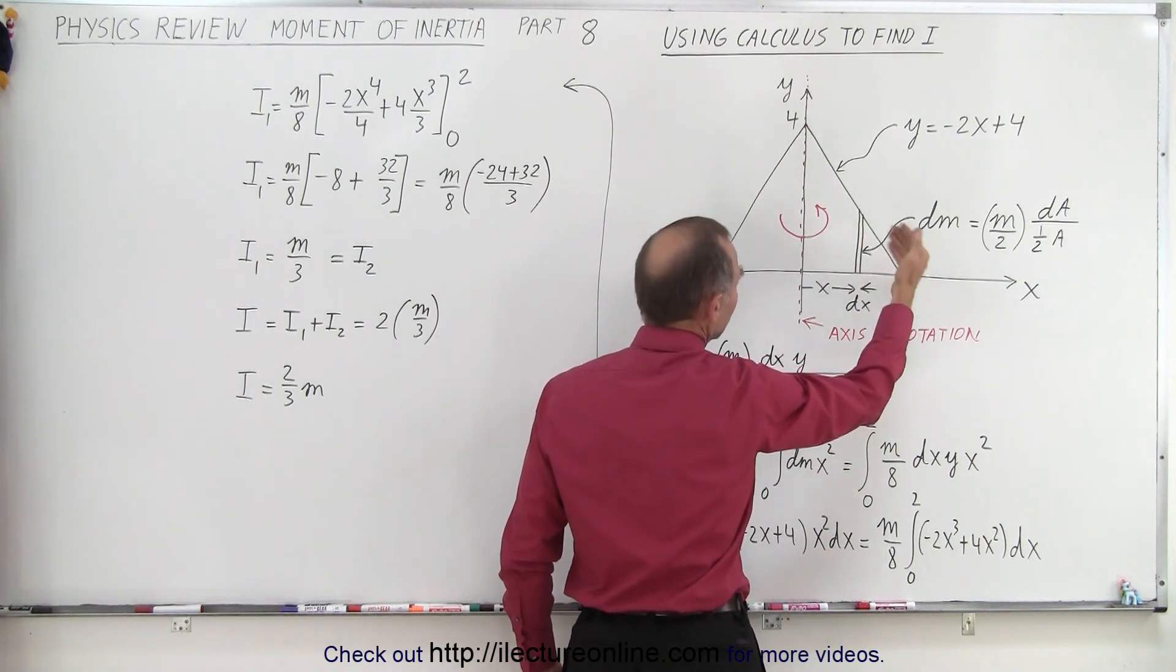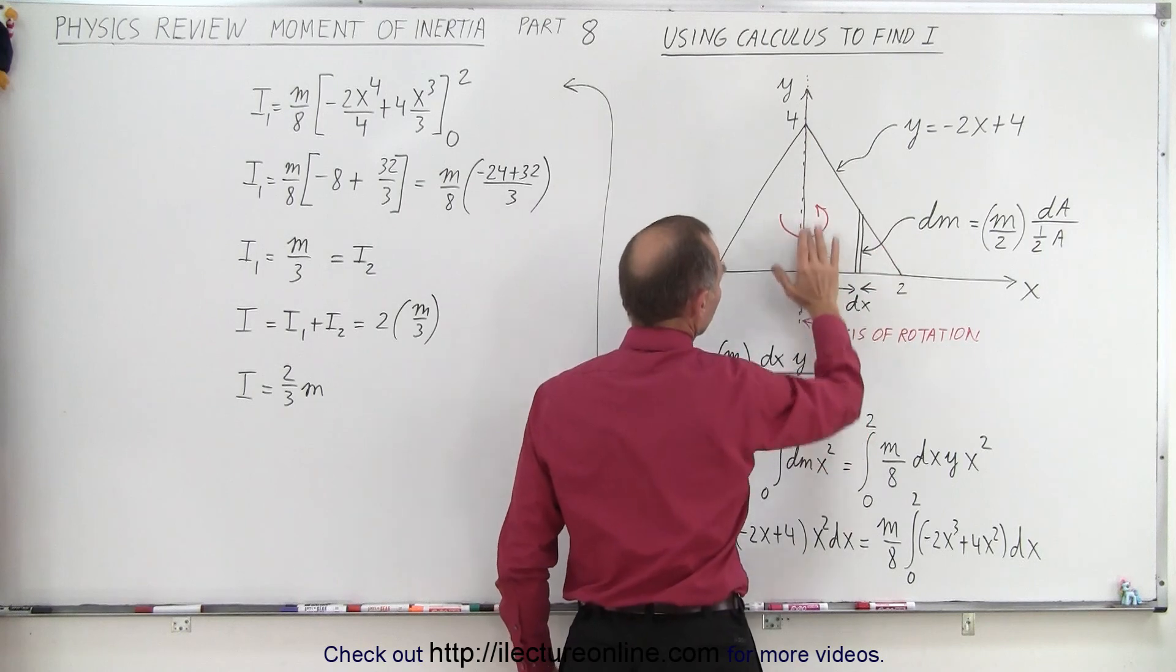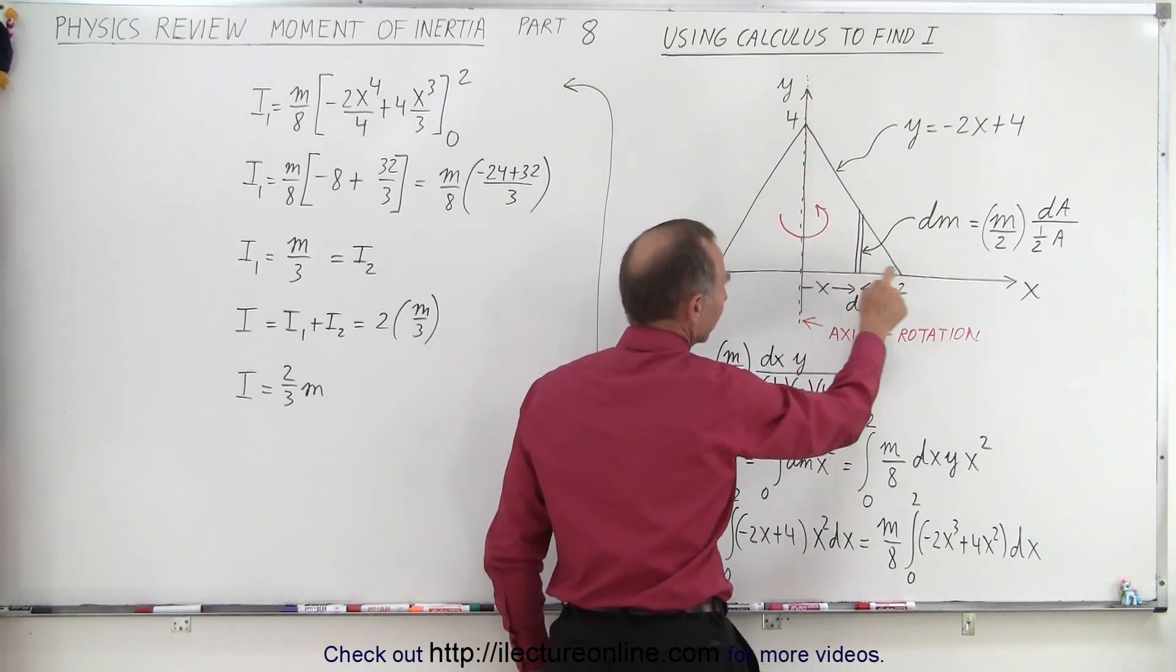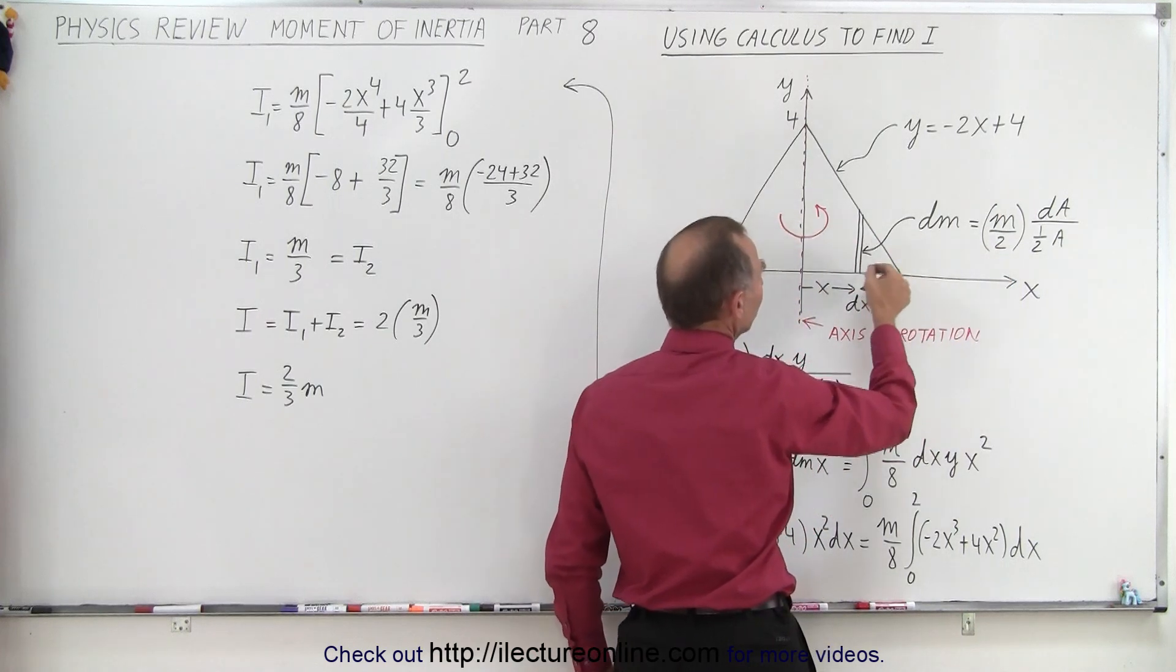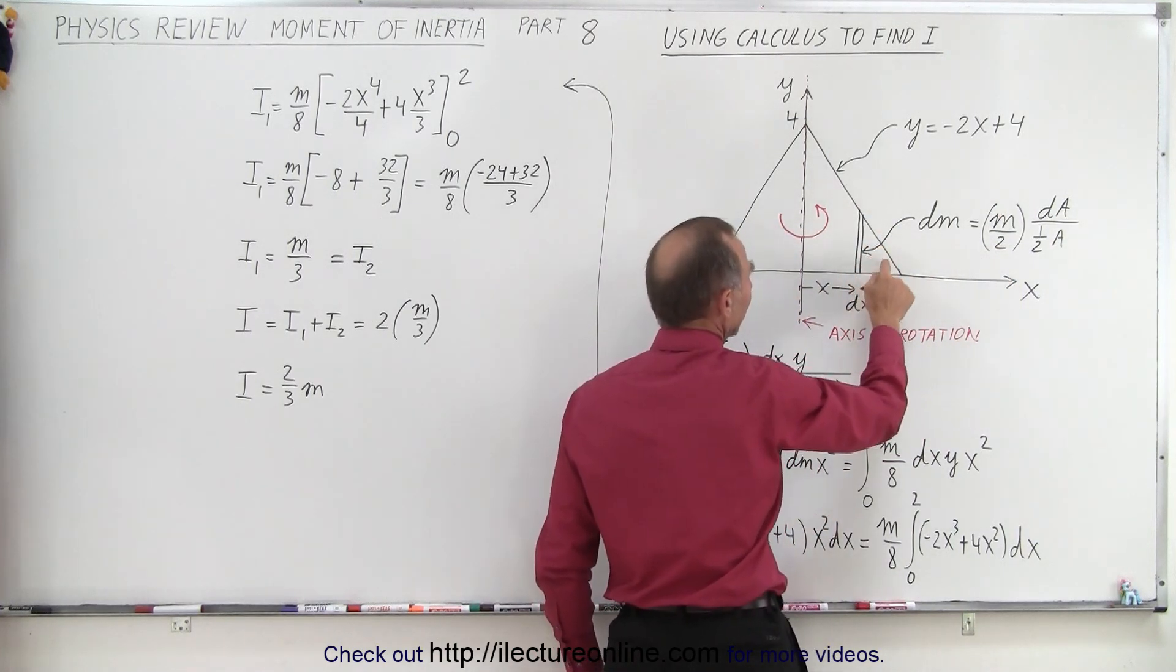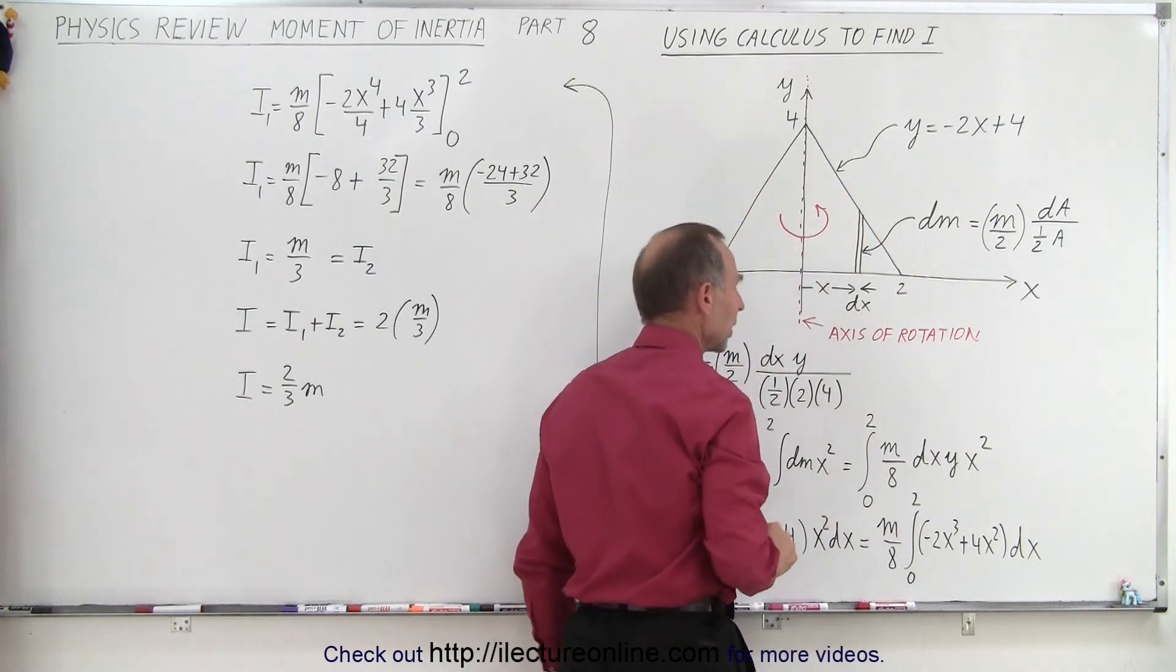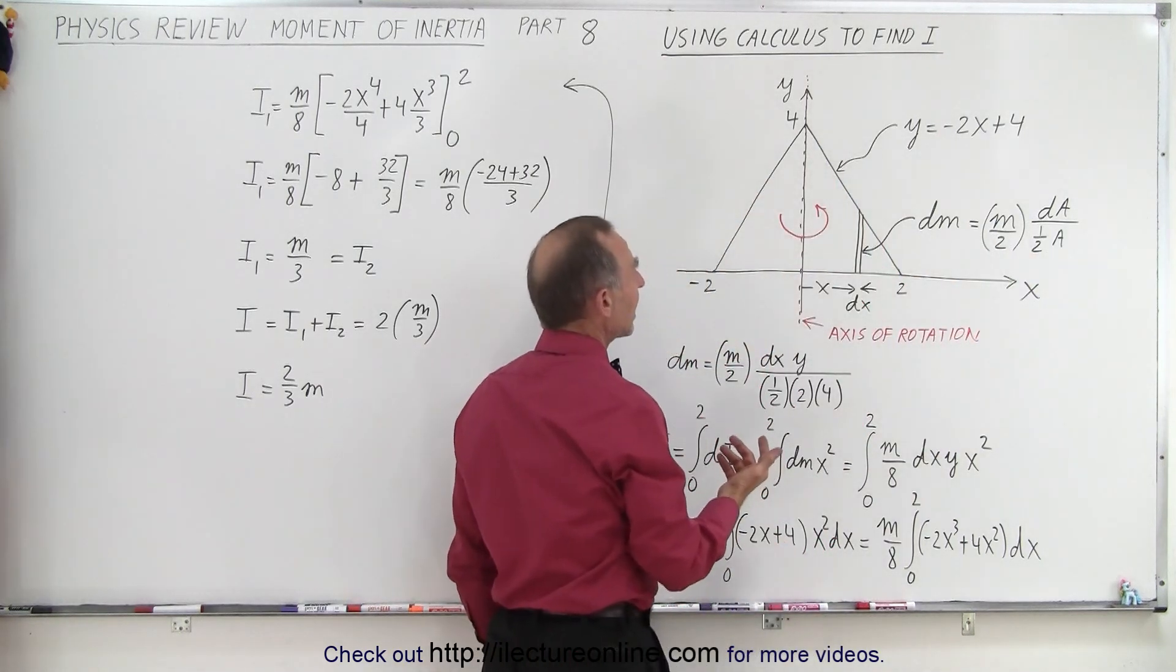The mass of that is going to be equal to the mass of the total triangle, or at least half of the triangle, I should say. Therefore we have m over 2, times the ratio of the area of this little strip, divided by the area of this triangle, which of course is half the area of the whole triangle. How do we find dA?